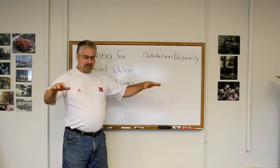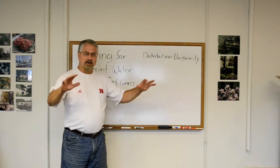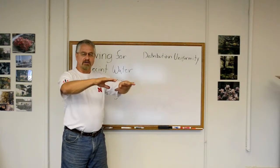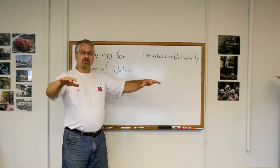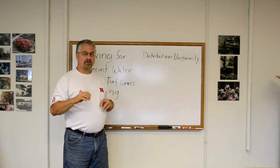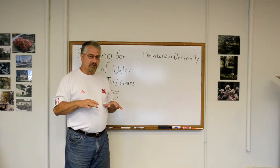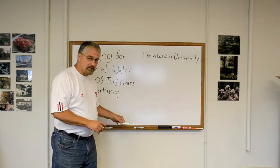Distribution uniformity is, as the word says, when the sprinkler heads are applying water to your turf grass area, how uniform is the distribution of it. And one of the things that we will be doing to test this uniformity in a sprinkler zone or an area is called audit.